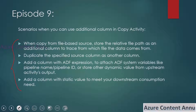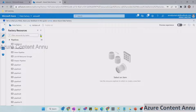Here are a few scenarios where we can make use of the additional column option in copy activity. The first one says: when we need to copy from a file-based source, we can store the relative file path as an additional column to trace which file the data comes from. Let me demonstrate this practically — let me go to the ADF pipeline and start creating a pipeline.